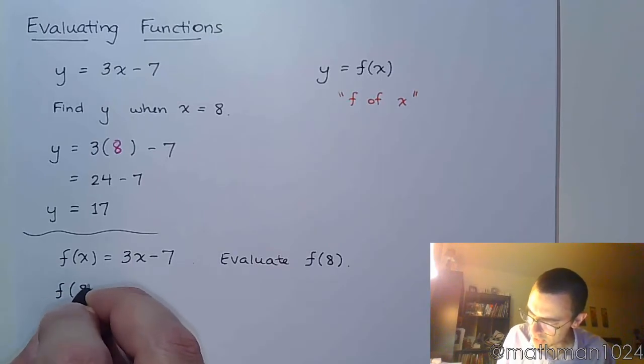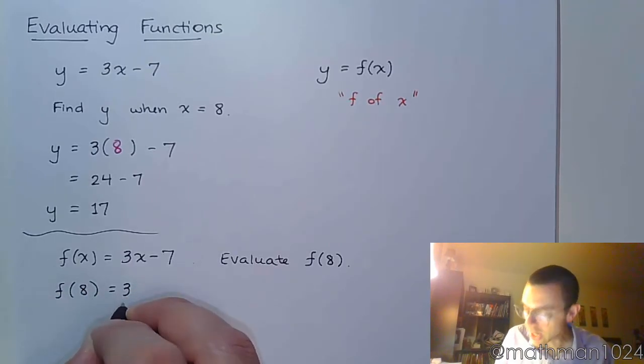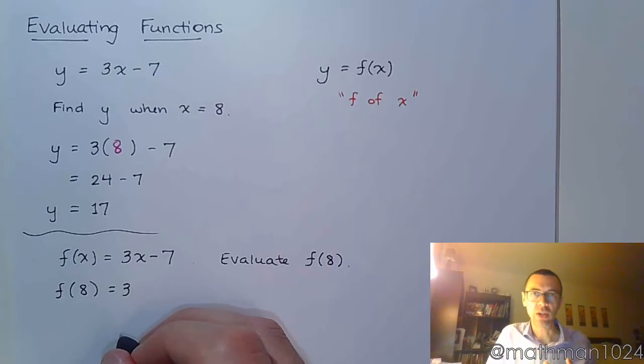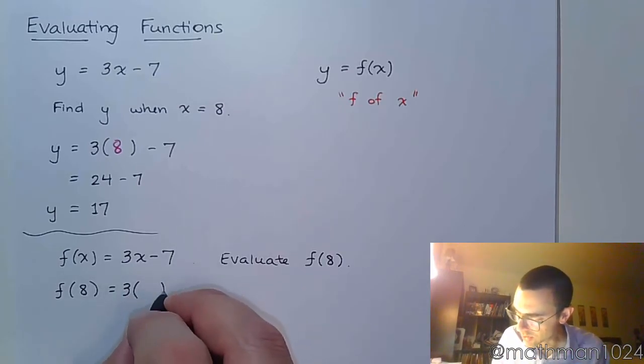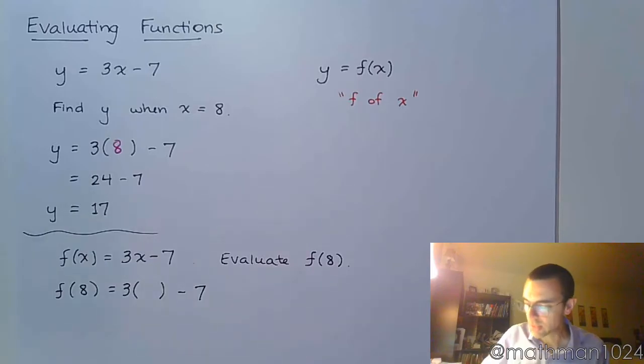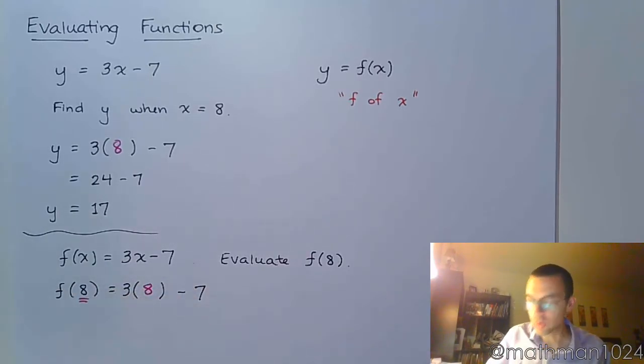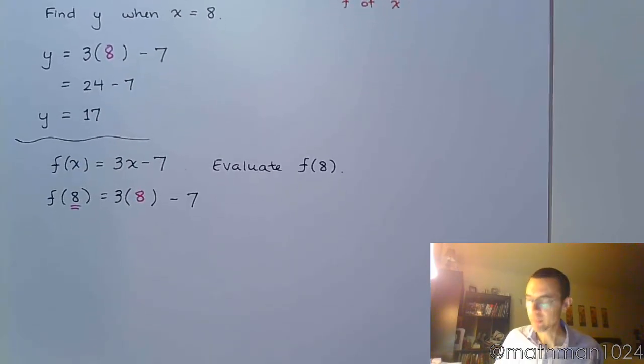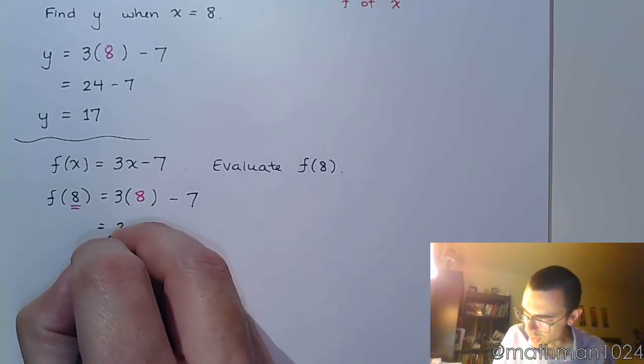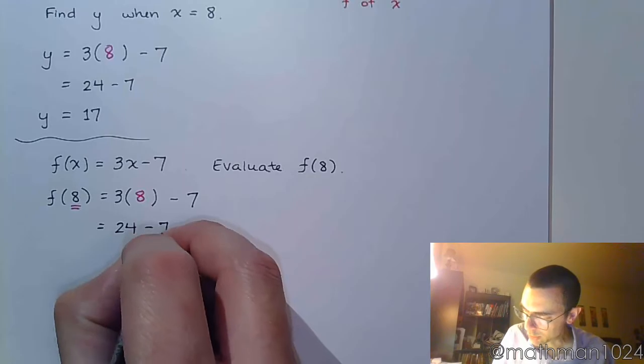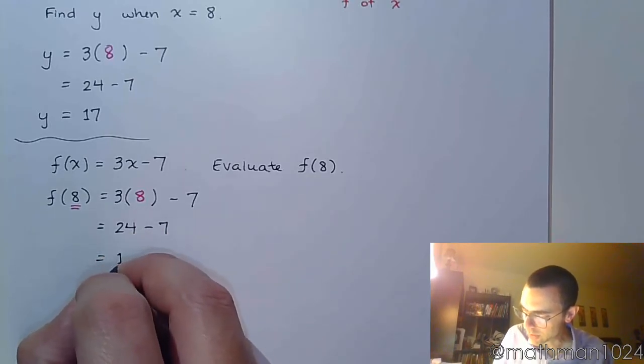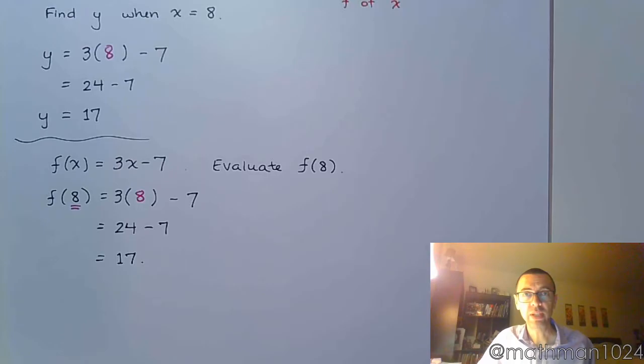So you would write it like this. You would say f of 8 equals. Now, at this point, x is gone. x has been replaced with 8, so we use parentheses everywhere we see x. And you would now plug in this input value of 8. And again, you just work it out the same way we did up above, and we come to this answer, 17.